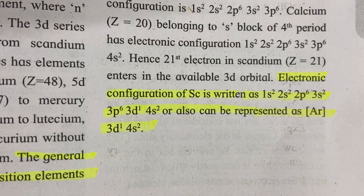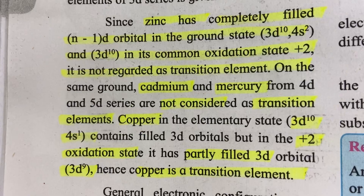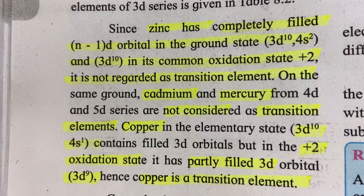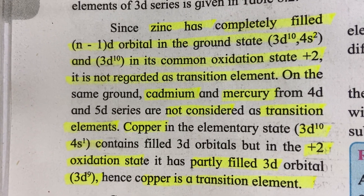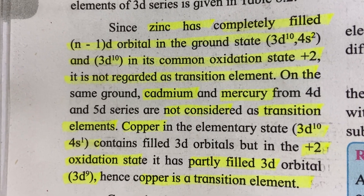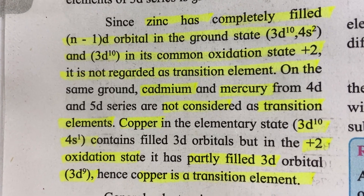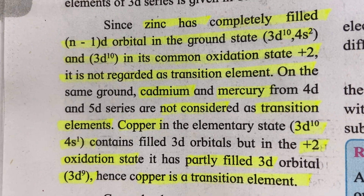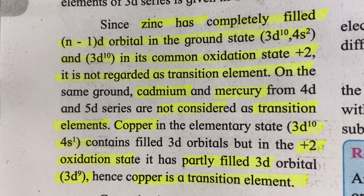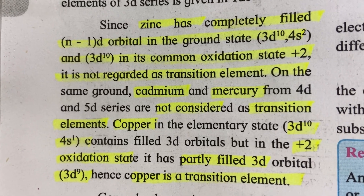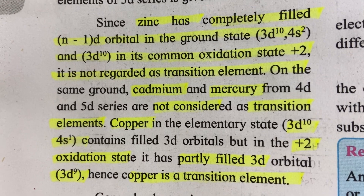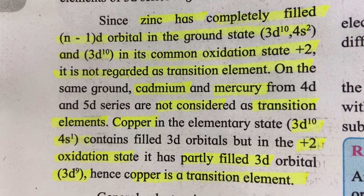A common exam question: zinc is not considered as a transition metal. Zinc has completely filled (n-1)d orbitals in the ground state — that is 3d¹⁰ 4s² — and also 3d¹⁰ in its common oxidation state of +2. So it is not regarded as a transition element.